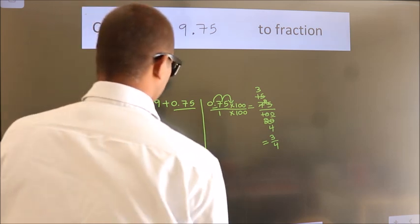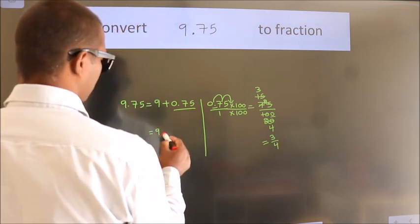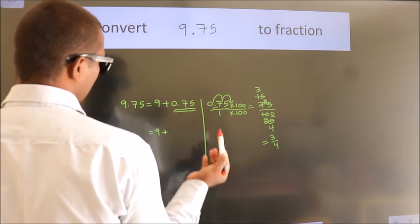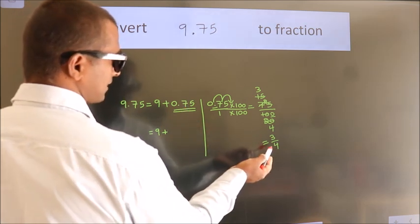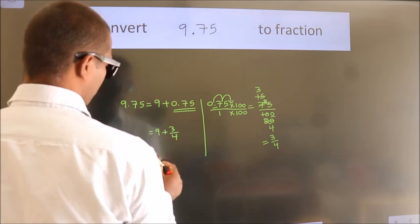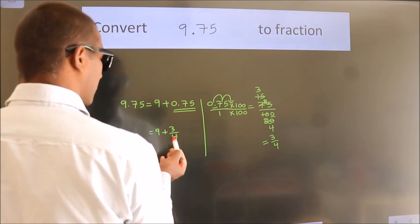Now here, 9 plus in place of 0.75, now we write this fraction 3 by 4. 9 plus 3 by 4.